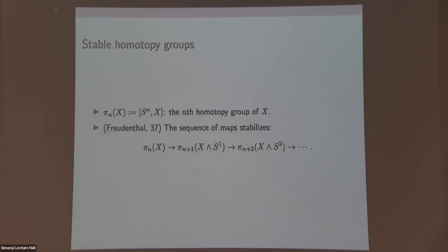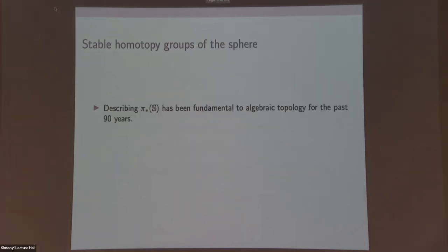In topological spaces, the most basic objects are spheres. So we want to understand the stable homotopy groups of the sphere. This object turns out to be pretty hard to fully understand. Describing the stable homotopy groups of the sphere has been fundamental to algebraic topology for the past 90 years. This relates to questions in geometry. For example, Pontryagin's results say that you can describe some classes of stably framed manifolds using the stable homotopy groups of the sphere.